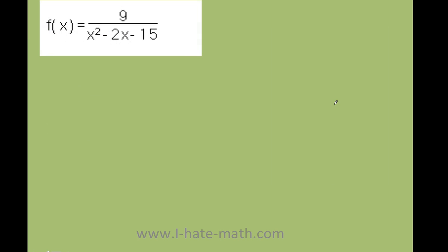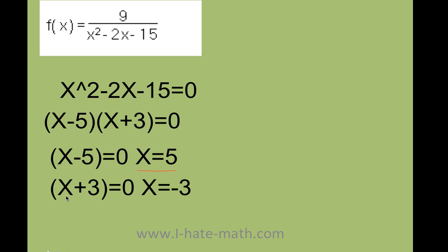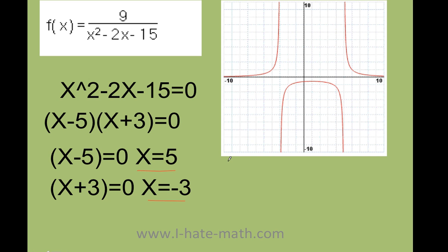Let's do another example, a little bit more complicated. I have x squared minus 2x minus 15 in the denominator. I grab the bottom, make it equal to zero, and factor it. I need to figure out the values that make the denominator equal to zero. x minus 5 equals zero gives x equals 5 — that's one vertical asymptote. And then x plus 3 equals zero gives x equals negative 3 — that's the other vertical asymptote.